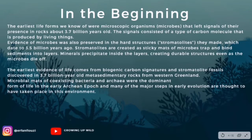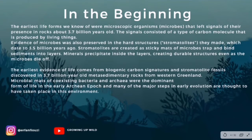But that's not how life on Earth used to be. The earliest life forms we know of were microscopic organisms — microbes — that left signals of their presence in rocks about 3.7 billion years ago. The signals consisted of a type of carbon molecule that is produced by living things. Evidence of microbes was also preserved in the hard structures called stromatolites they made, which date to 3.5 billion years ago.